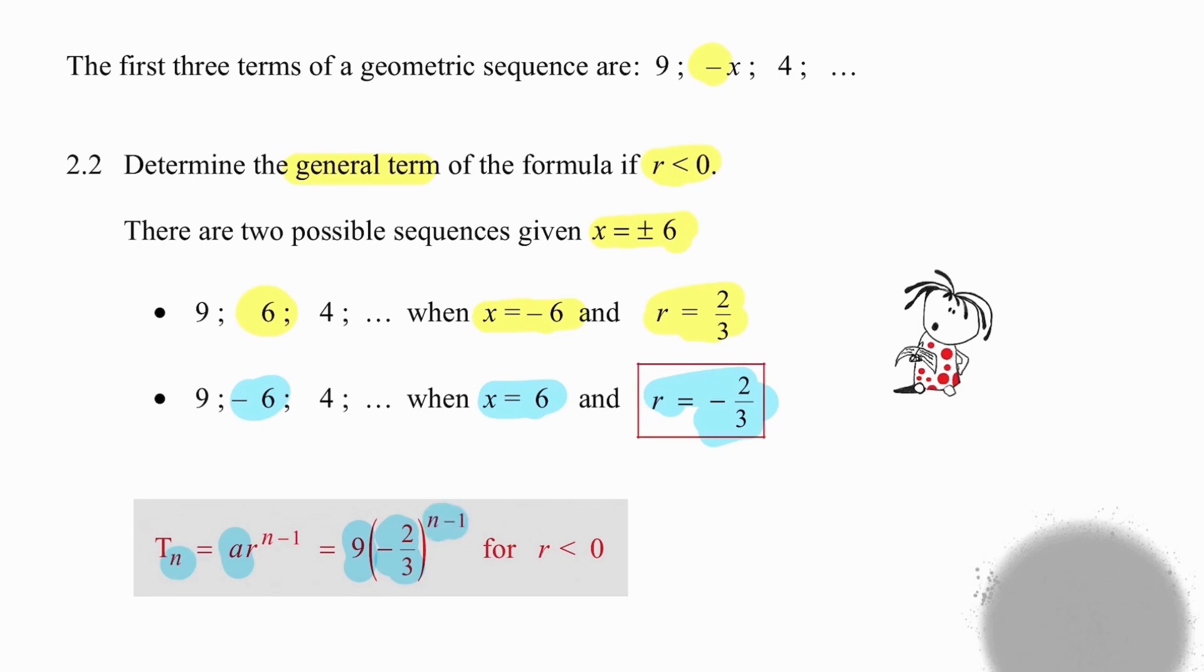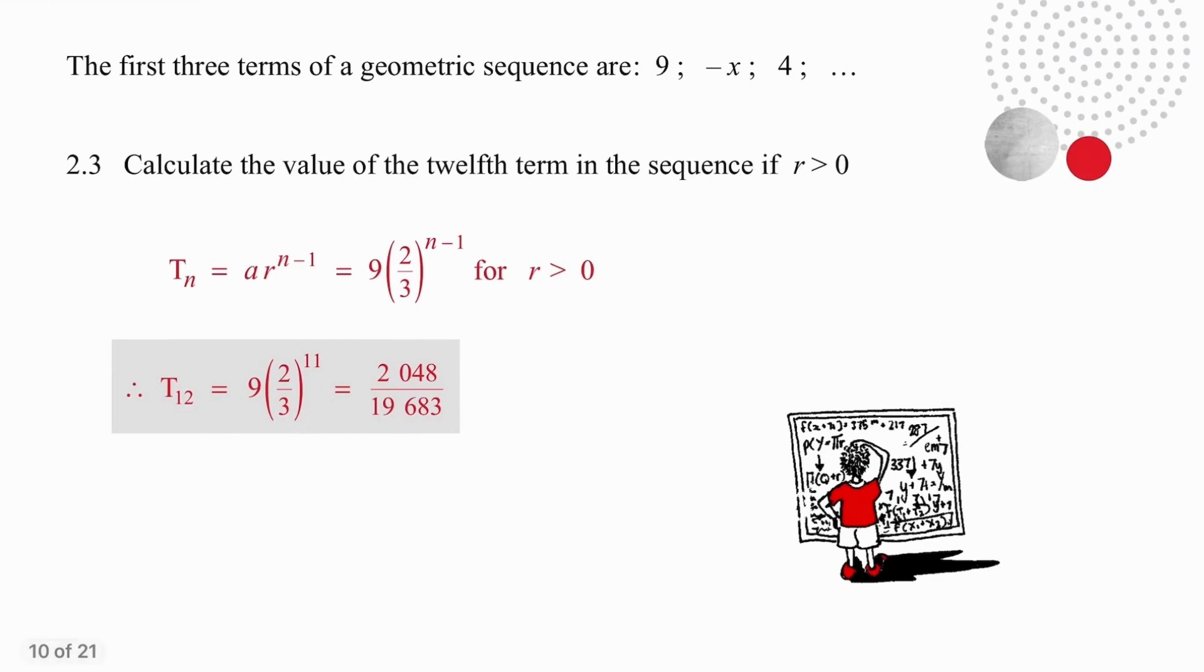In question 2.3 we want the 12th term but you need to concentrate we are not working with the same ratio now we are working with a positive ratio. So it's quick to adapt the formula.